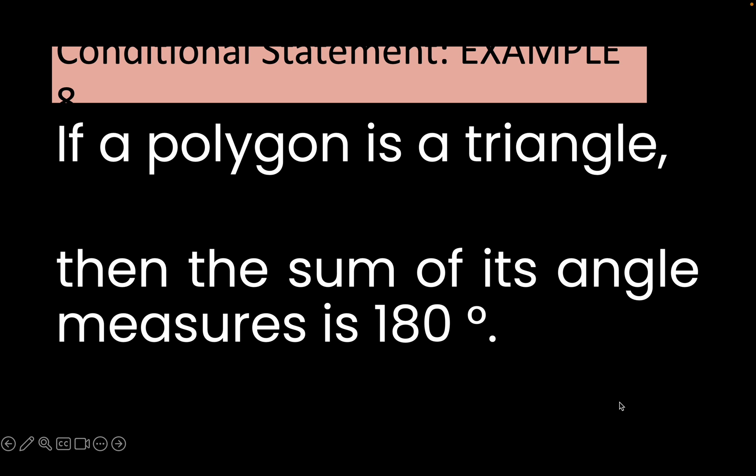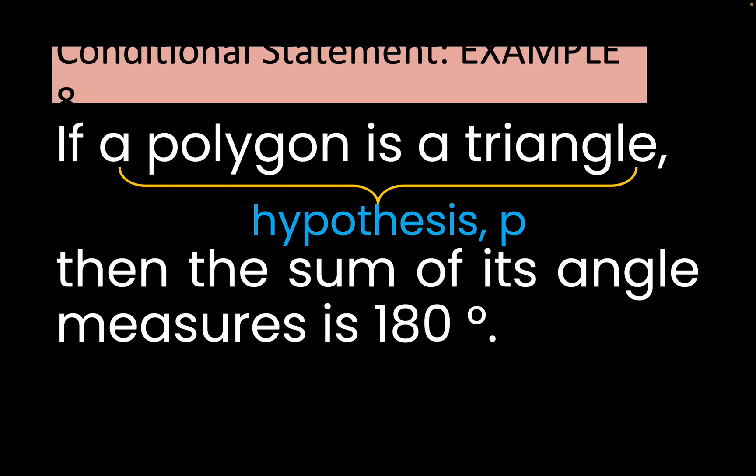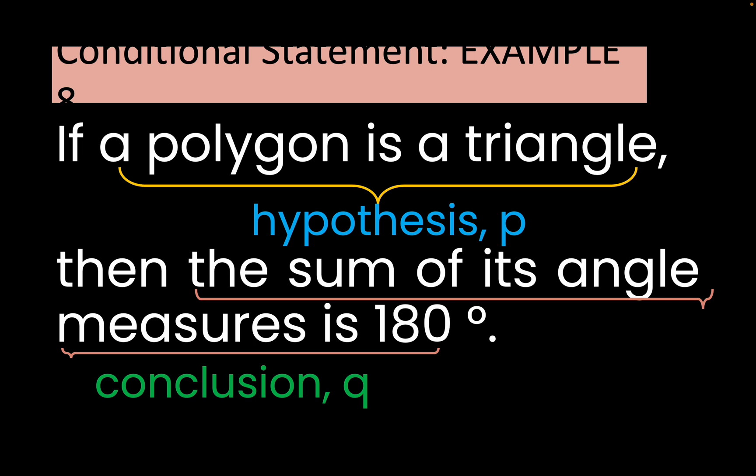Let's have this example of a conditional statement. If a polygon is a triangle, then the sum of its angle measures is 180 degrees. The if-statement is the hypothesis, and the statement after 'then' is your conclusion. So your hypothesis or p is 'a polygon is a triangle,' and your conclusion is 'the sum of its angle measures is 180 degrees.'